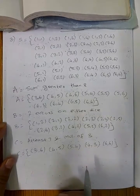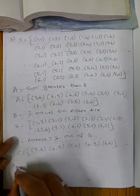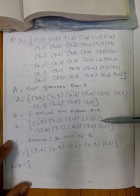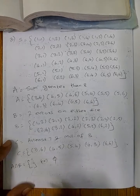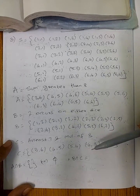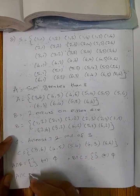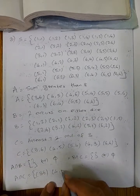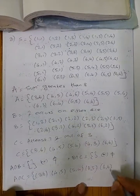Now we check which pairs of events are mutually exclusive by finding intersections. A intersection B: common elements of A and B. Checking pairs like (3,6), (4,5), (4,6), (5,5), (6,6) against B — no common elements found, so A∩B is the empty set. B intersection C: checking (6,3) common to both — B∩C is also the empty set.